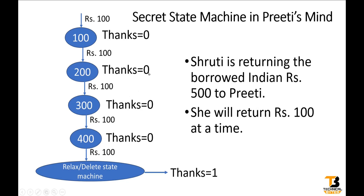Friends, the important thing I want to conclude from this state machine is: for the same input — which is a 100 rupee coin or note — the output is different. The thanks variable, which is our output, is 0 for the first 4 states and is only high for the last state. When each 100 rupee coin is given to Preeti, she is making a note inside her mind — 100 rupees is paid, 200 rupees is paid, 300 rupees is paid, 400 rupees is paid, 500 rupees is paid. And these notes are nothing but the states — the states of the mind in this case.